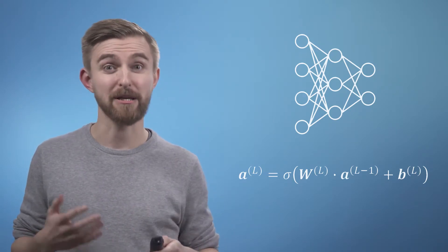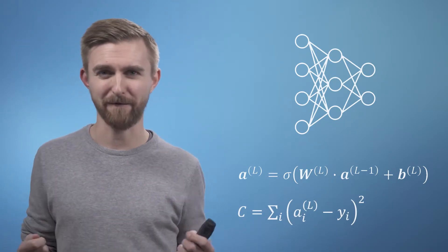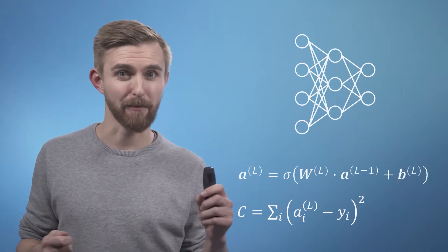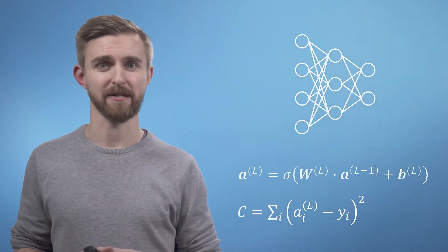However we can then define a cost function which is simply the sum of the squares of the differences between the desired output y and the output that our untrained network currently gives us.